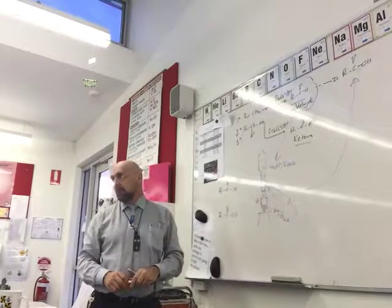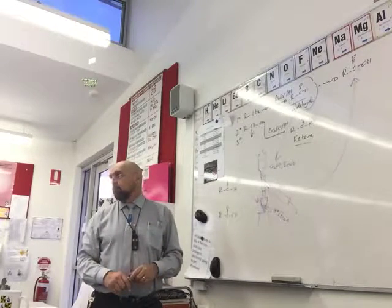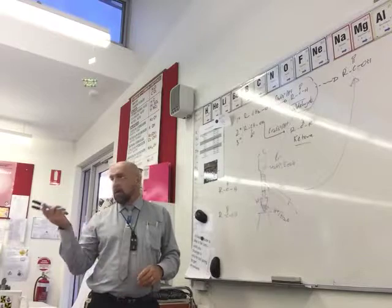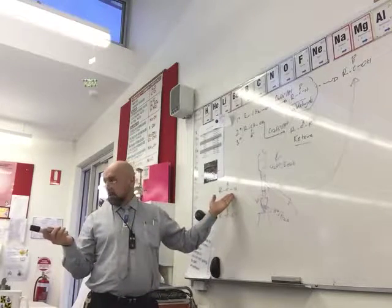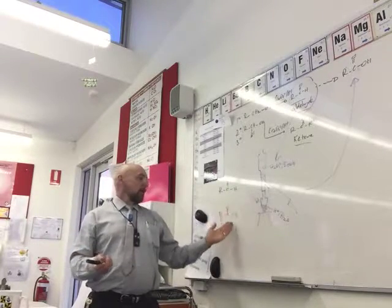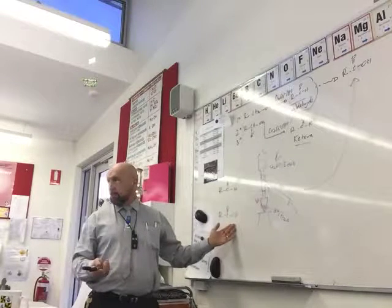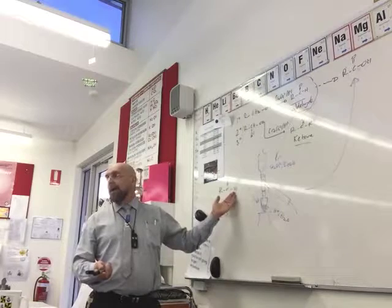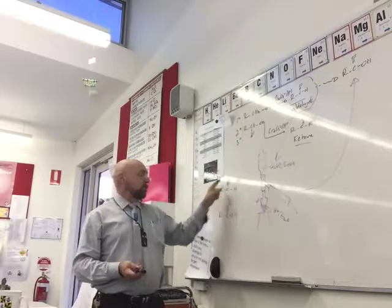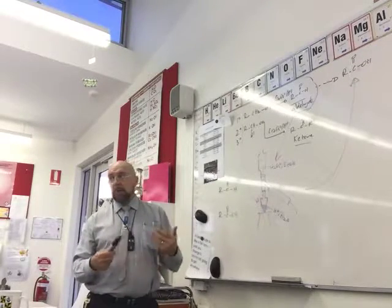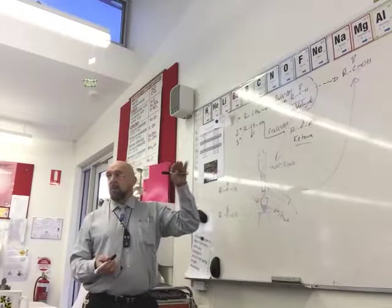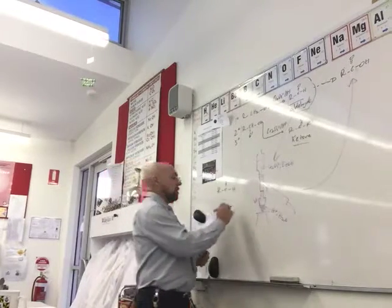Even if some carboxylic acid is produced, when will it boil? It's going to boil after the aldehyde. Why does it have a higher boiling point? Because of H-bonding. The carboxylic acid undergoes H-bonding. The aldehyde can't H-bond with itself — it has no OH group. So the aldehyde only has dipole-dipole interactions, no H-bonding. H-bonding is the strongest secondary bond, so the carboxylic acid has a higher boiling point.